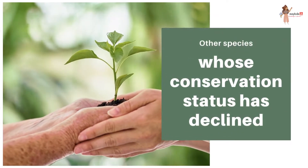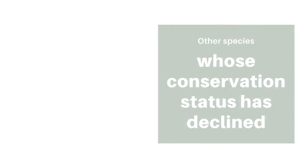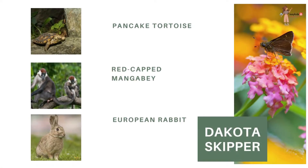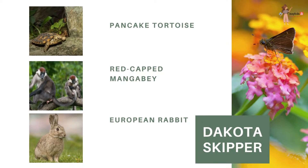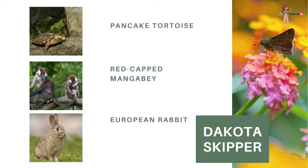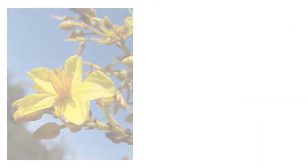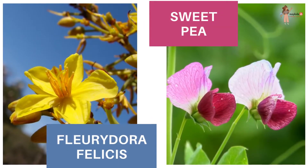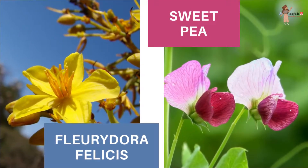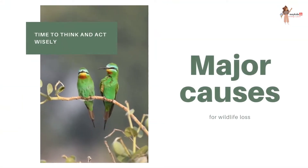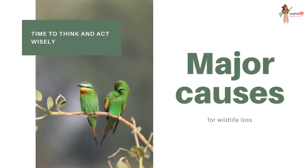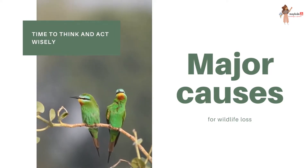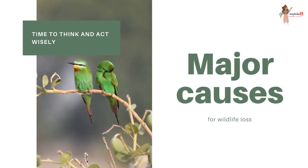Other species whose conservation status has declined include the pancake tortoise, red-capped mangabey, European rabbit, and Dakota skipper. Don't you think it is time to think and act wisely?